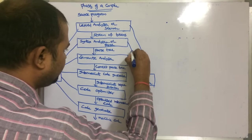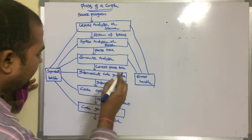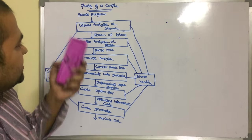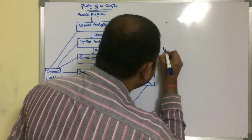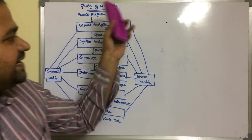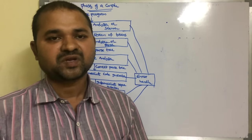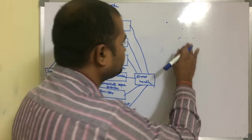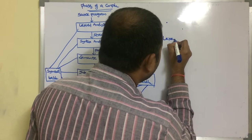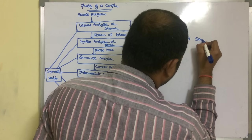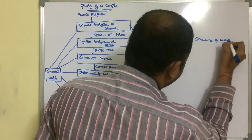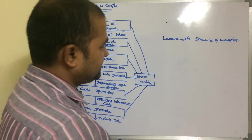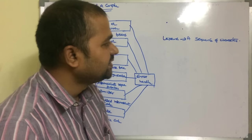The lexical analyzer interacts with the error handler, as does the syntax analyzer, intermediate code generator, code optimizer, and code generator. Now let's see the first phase: lexical analyzer. The lexical analyzer reads the source program character by character and converts the corresponding characters into some meaningful sequences called lexemes. A lexeme means a sequence of characters.